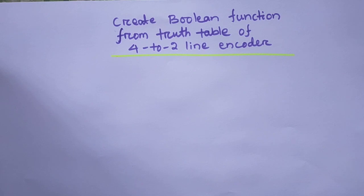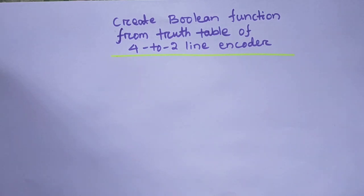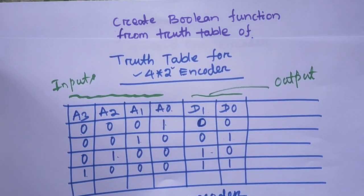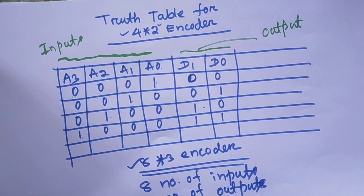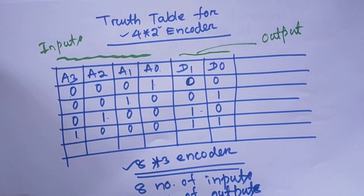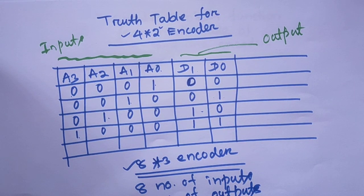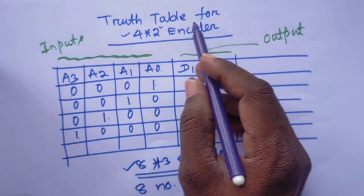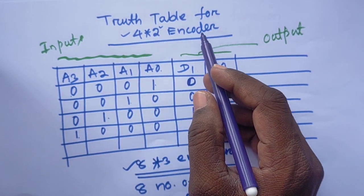I have to find out how to create a Boolean function if the truth table of an encoder is given. Since the last lecture already discussed this, I will show you the truth table of the 4-to-2 encoder. Very simple — I already designed it in the last class, this is just a repeat of that.